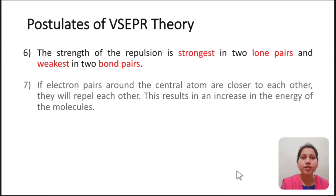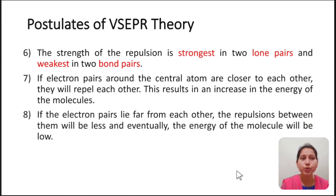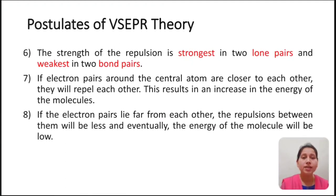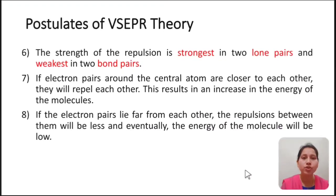The strength of repulsion is strongest between two lone pairs and weakest between two bond pairs. If the electron pairs around the central atom are closer to each other, they will repel each other, resulting in an increase in the energy of the molecule, and therefore the molecule will be less stable. If the electron pairs lie far from each other, the repulsions between them will be less, the energy of the molecule will be low, and the structure will be more stable.